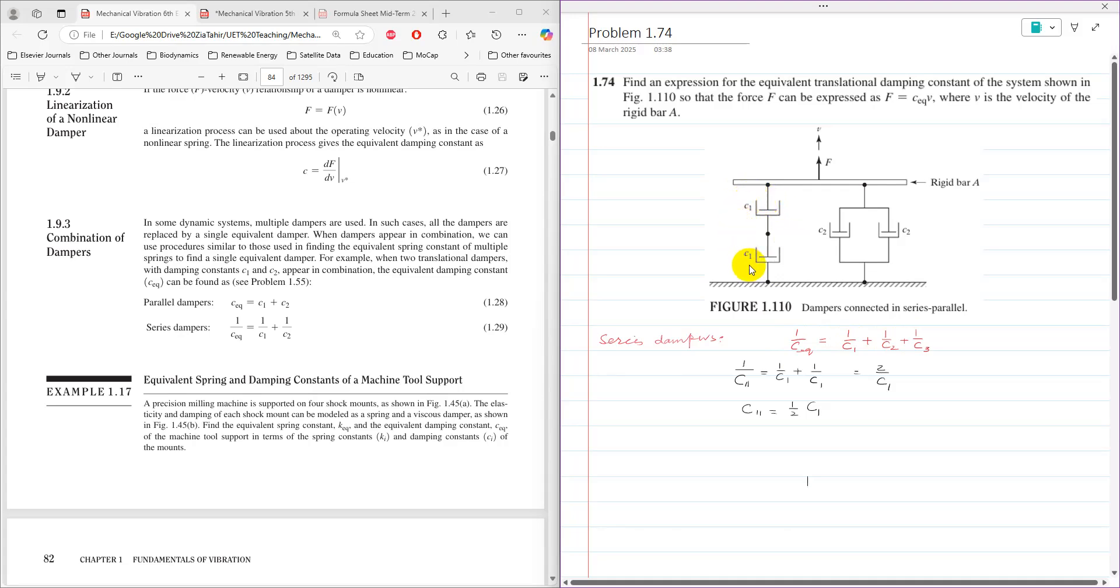So that is 2 over c1, and after taking the reciprocal, c11 is c1 over 2.